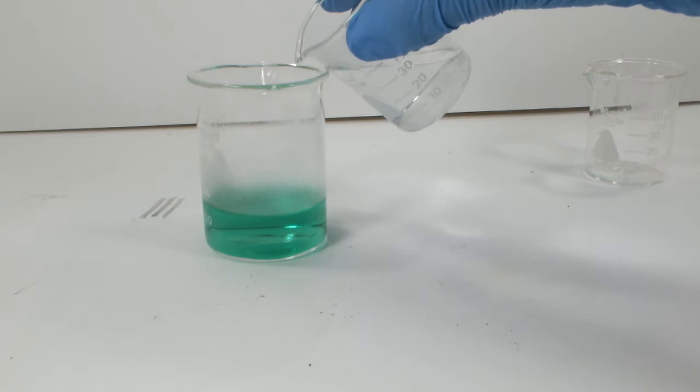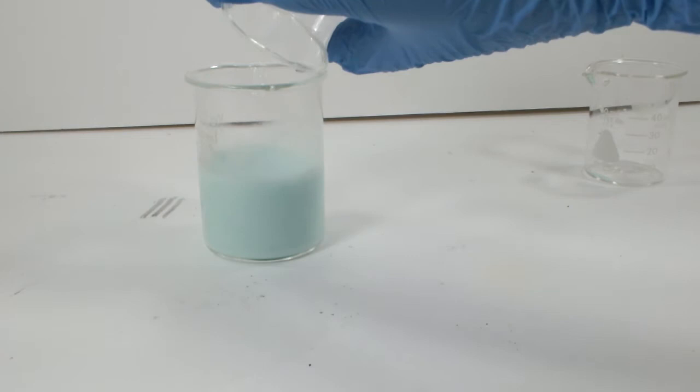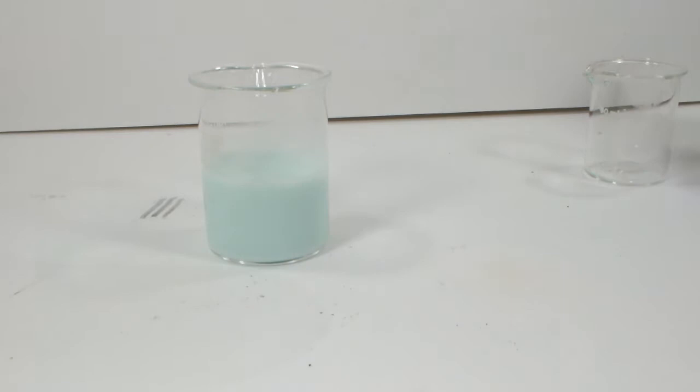As soon as the barium chloride goes in, you can see a very fine precipitate of barium sulfate. Since I'm going for quantitative yield, every last drop has to come out of the beaker.